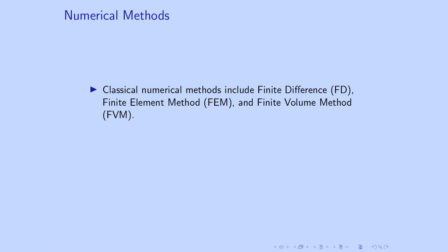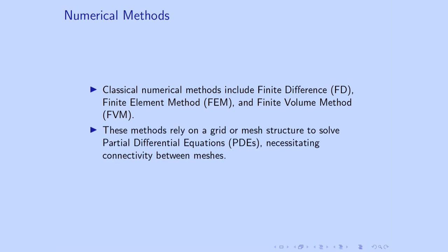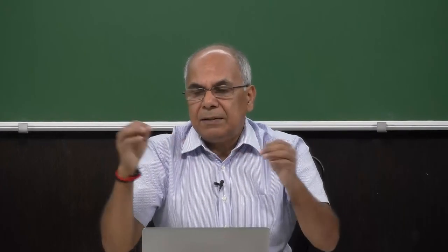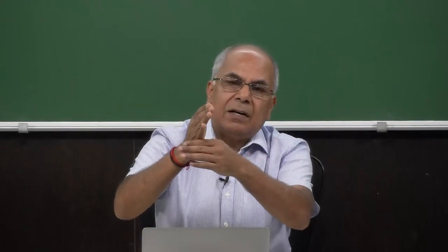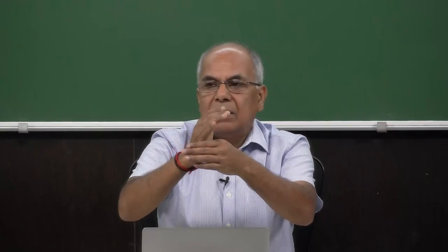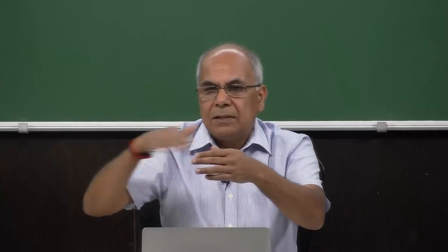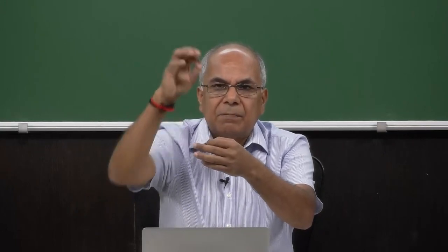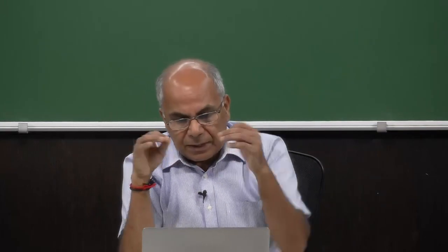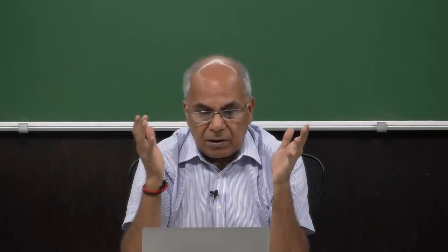Looking at numerical methods, the classical methods include finite difference, finite volume, and finite element methods. These methods have some type of grid structure and connectivity between grid points. For example, in the one-dimensional case, if I am sitting at grid i, I have neighboring grids i-1 and i+1. In 2D, sitting at the center, I have grids left, right, top, and bottom. I always have this type of connectivity — this is called a mesh method.